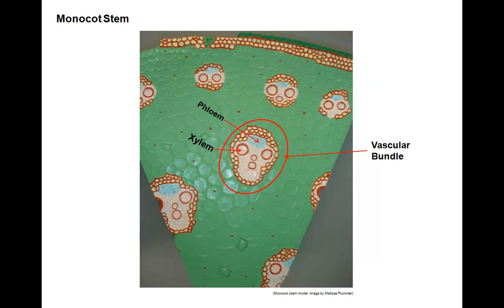Here is a model of a cross-section of a monocot stem. We know just by looking at the arrangement of the vascular bundles of xylem and phloem being scattered throughout that this is a monocot, as compared to the ring arrangement found in dicots. There is no vascular cambium in monocots, so monocot plants do not have secondary growth — they give rise to lateral growth.